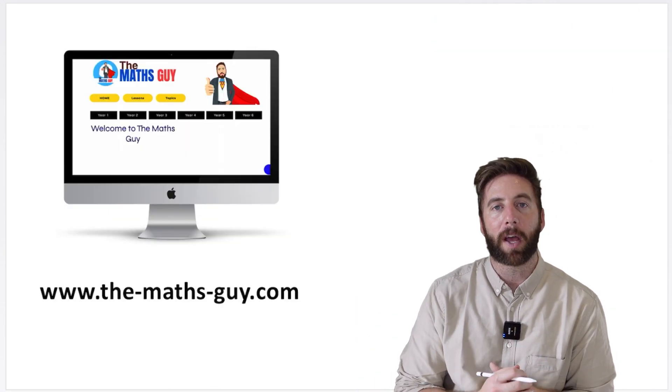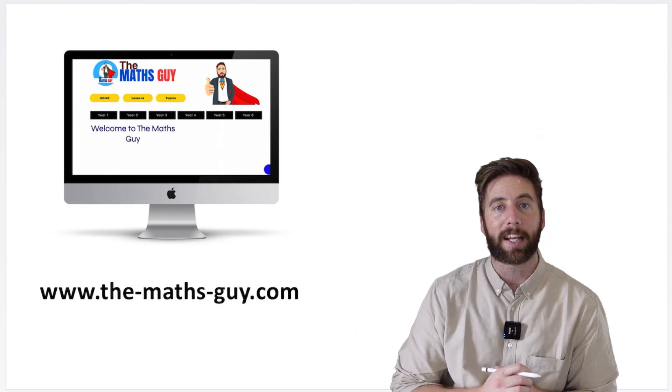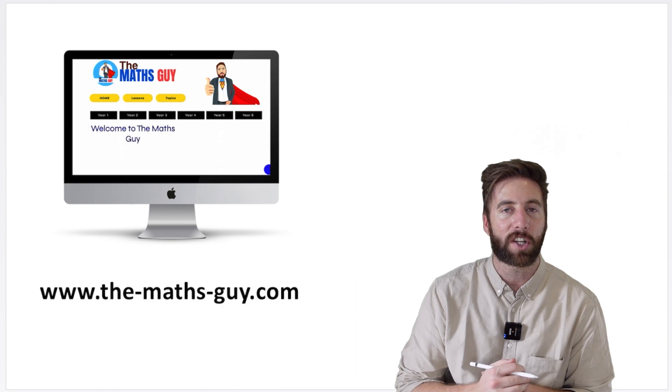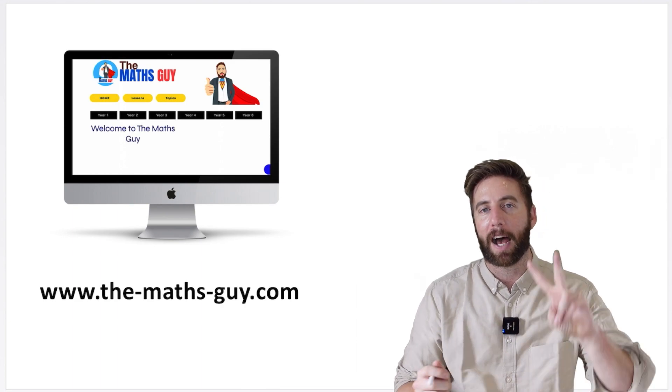Okay guys, there you have it. That is multiplying a 2 digit by a 2 digit in the expanded column method. Well done if you got the answers correct from the previous section. I'll see you in another video. Peace out.